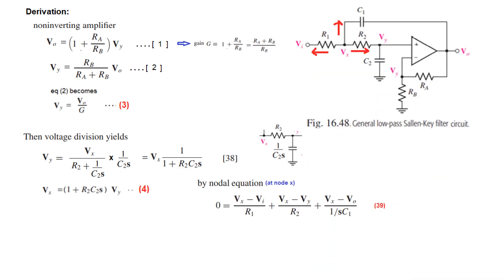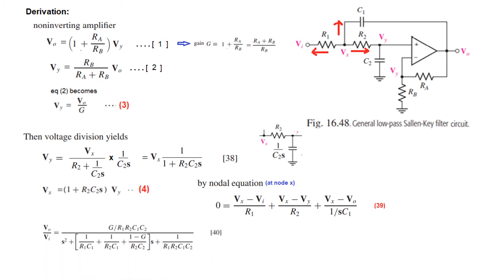Now we will write the nodal equation at node X. At node X, there are three currents all leaving the node, so their sum equals zero. The first current is (VX − VY)/R1, the second is (VX − VY)/R2, and the third is (VX − V0)/(1/SC1), which in the S-domain is (VX − V0) × SC1. The sum of these three currents equals zero.